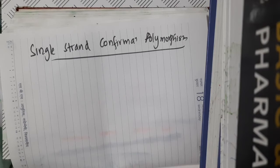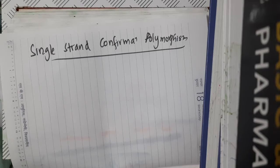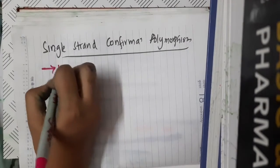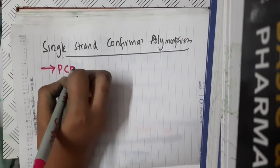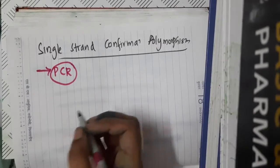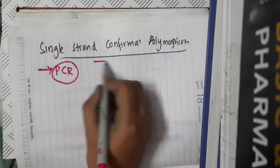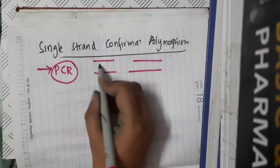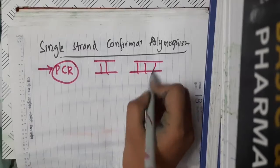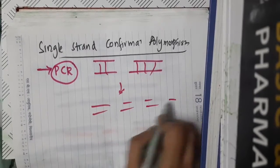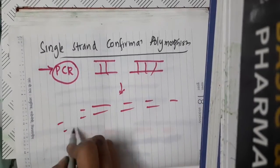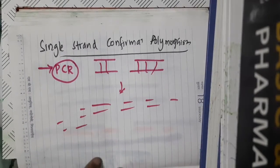In this single strand conformation polymorphism, what we do here is first we will do a PCR. We will amplify a set of DNA — if this is the DNA, we are amplifying the sets of DNA which are required.